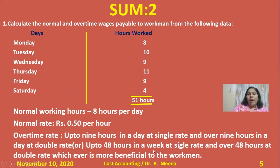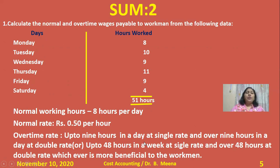The second scheme is: up to 48 hours in a week at single rate, and over 48 hours at double the rate. The worker worked 51 hours in total. So up to 48 hours the company gives 50 paise per hour. Over 48 hours: 51 minus 48 = 3 hours extra at double the rate, which is 1 rupee per hour.